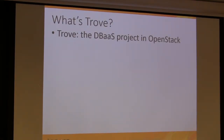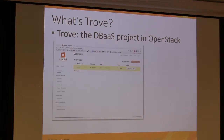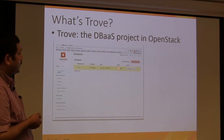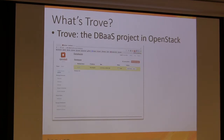Let's talk about databases in OpenStack. What is Trove? Trove is the Database as a Service project in OpenStack. The basic idea is to be, for OpenStack, something which is a combination of both Amazon RDS and DynamoDB — RDS for relational databases and DynamoDB for NoSQL. This is the Horizon interface to an OpenStack cluster where you can look at the databases. There's a database here called my.db running on a tiny instance.